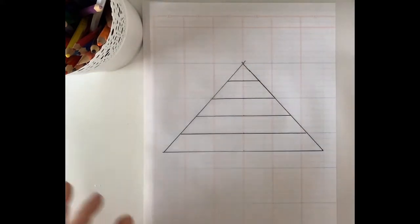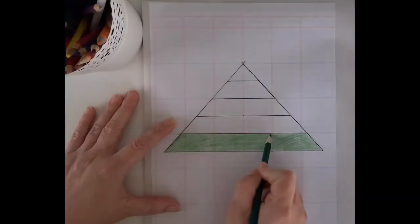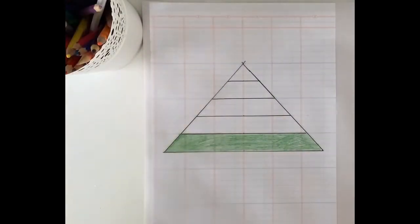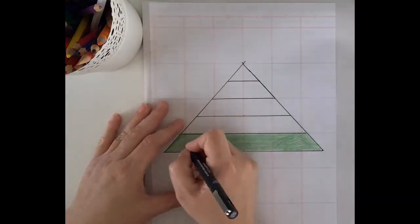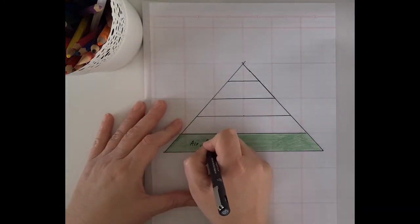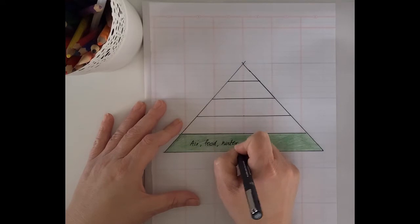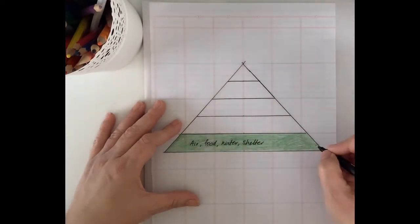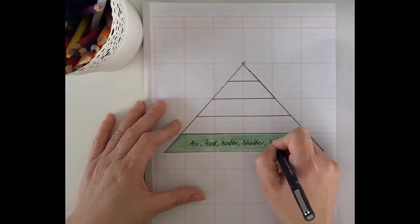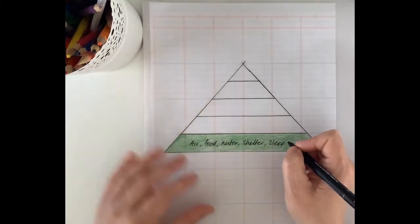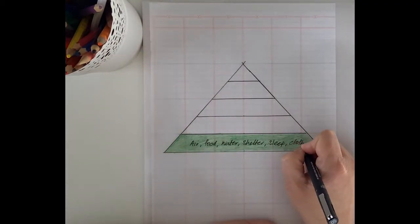Maslow's idea is that we all have the same types of needs and we're all motivated to achieve them in the same order. It kind of makes sense that at the bottom you would want to sort out your food, water, shelter, sleep and clothing before you would be motivated to look at things like love and belonging and your self-esteem.